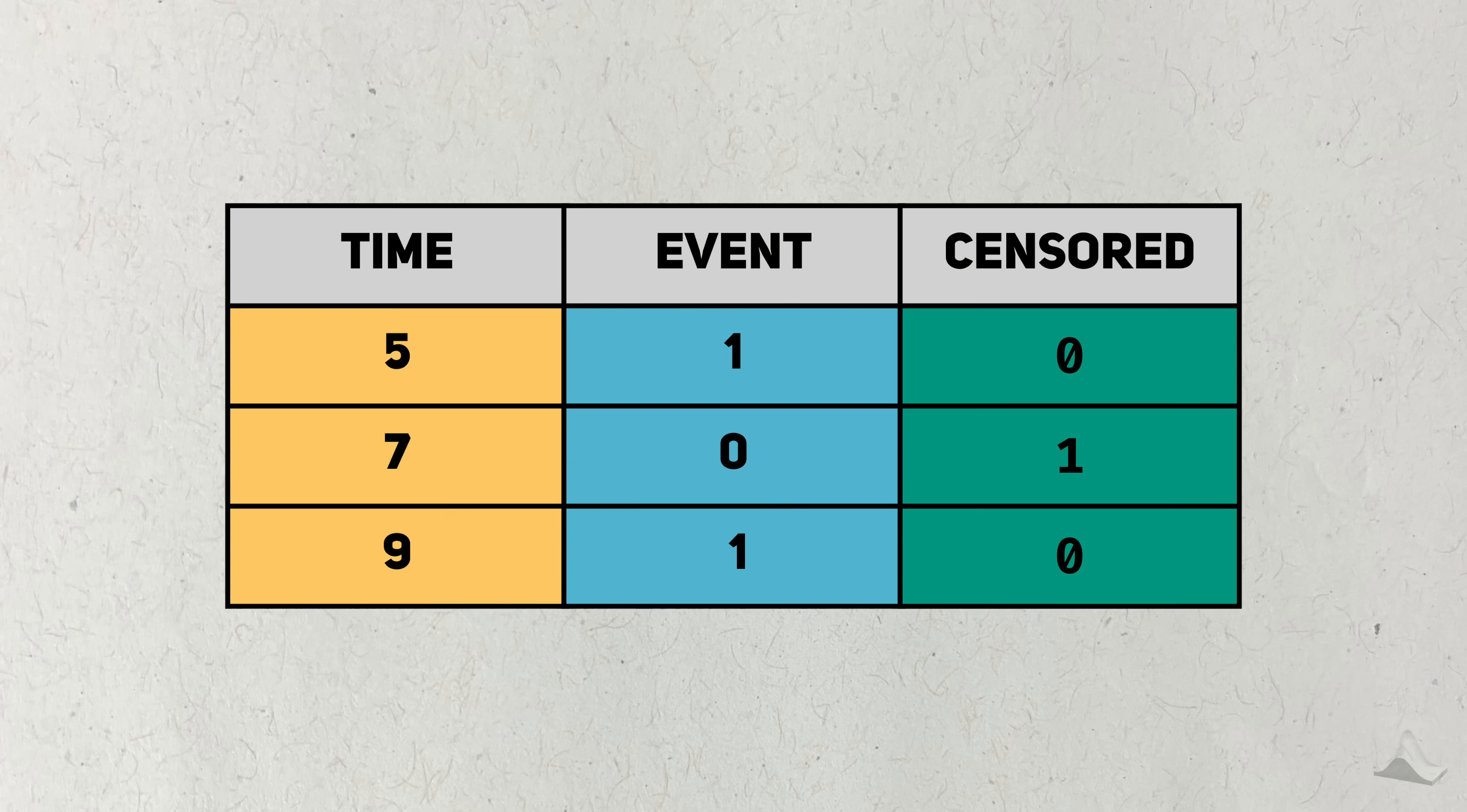With censoring in mind, here's the type of data we might collect for a survival study. First is the amount of time we observe before they either experience the event or get censored. We'll note this time as t. Second, we need to collect whether or not this person experiences the event. Third, we need to record whether or not this person was censored.